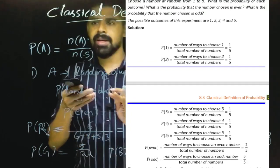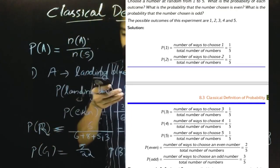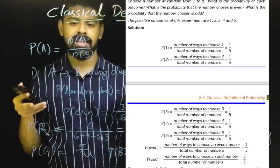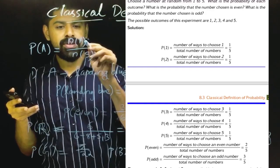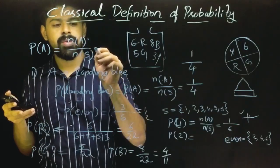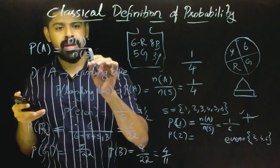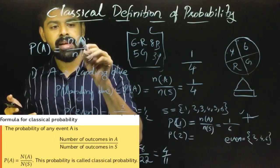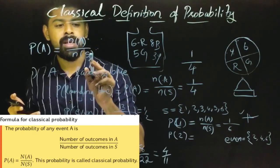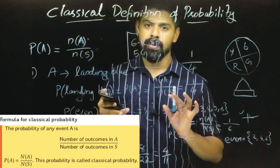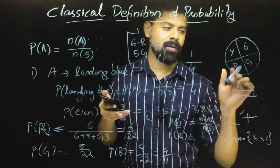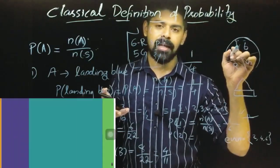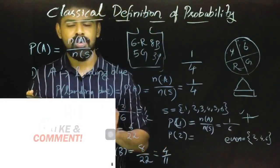Now we have covered the classical definition of probability. The definition is: number of favorable outcomes divided by the number of outcomes in the sample space. We have a number of favorable outcomes and the number of sample space.